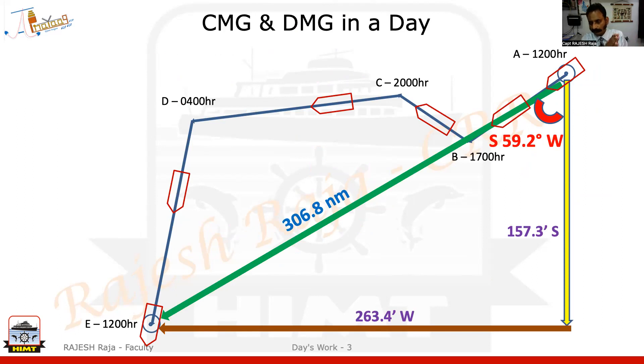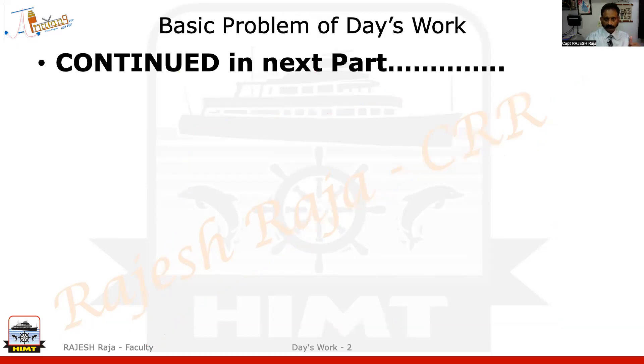So what we found in this module: DMG = 306.8 nautical miles and CMG = S 59.2° W (239.2°T). I'm going to stop here because I want to keep each video around 10 to 12 minutes. I'll continue this question in the next video, which covers finding the noon position — the final aim of this question. Small videos, as I always say, help you concentrate and understand better. I'll catch you on the third part of the same question where we'll complete the day's work problem.